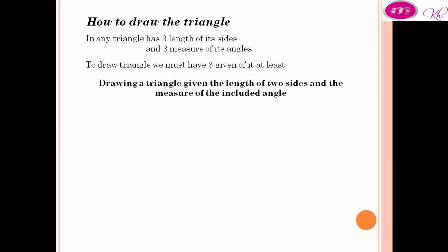Drawing a triangle given the length of two sides and the measure of the included angle. Draw triangle ABC in which AB equals 3 centimeters, BC equals 5 centimeters, and measure angle B equals 55 degrees.